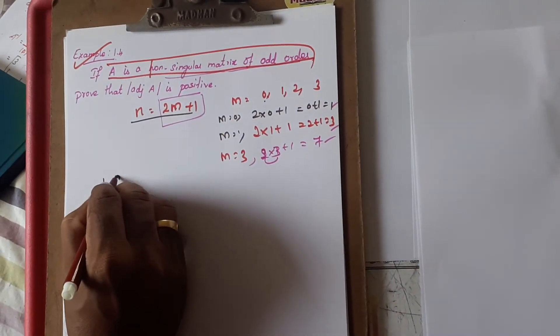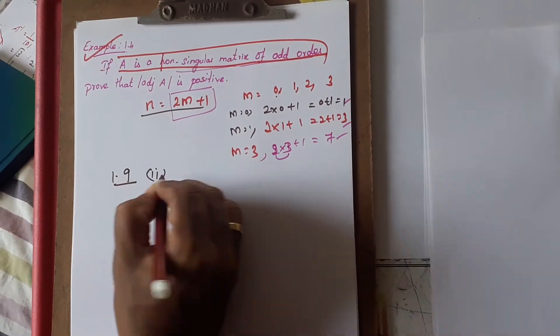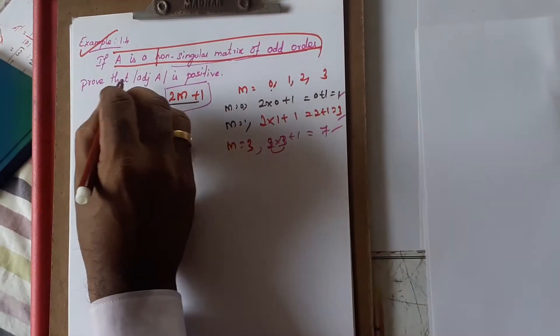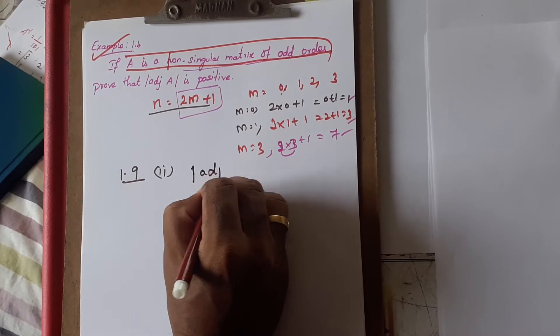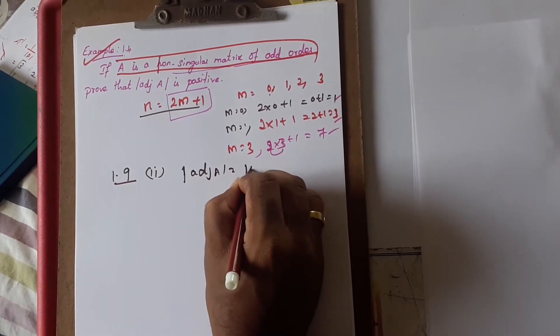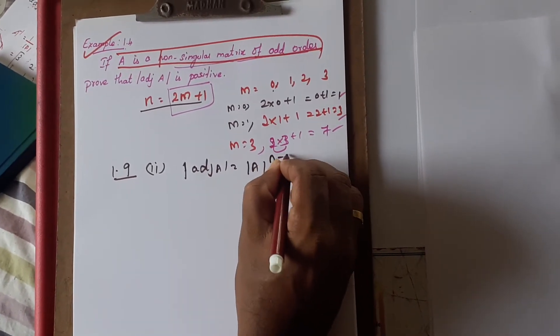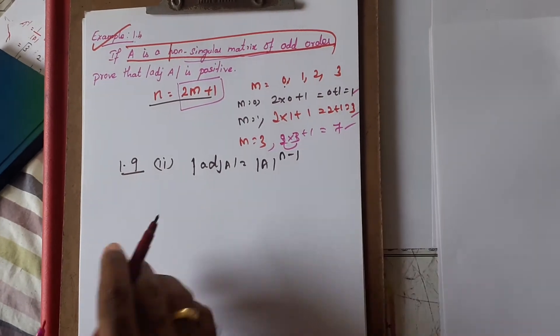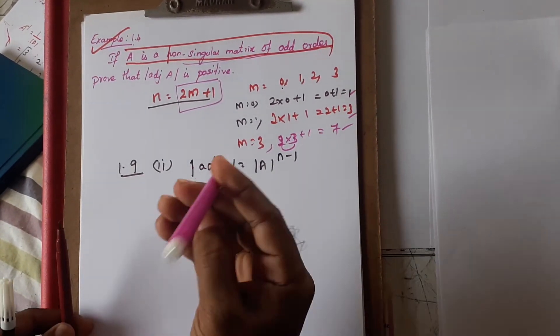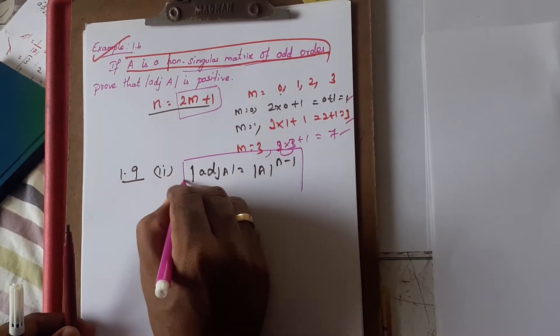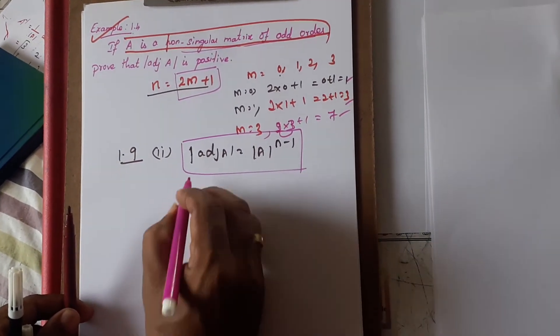According to theorem 1.9, they have given clearly: determinant of adjoint of A equals determinant of A to the power N minus 1. This is the formula.